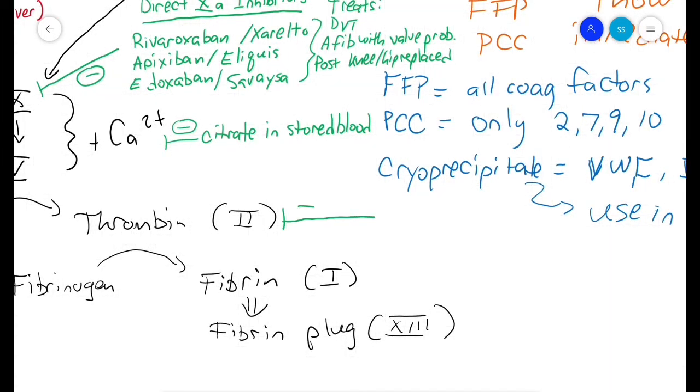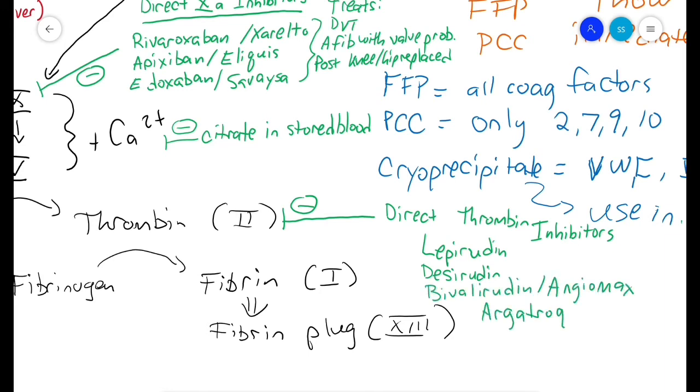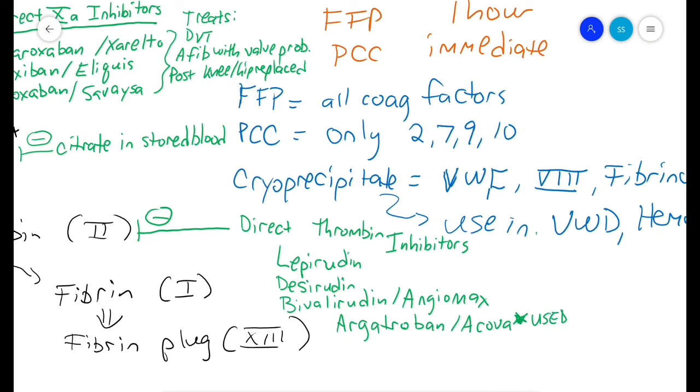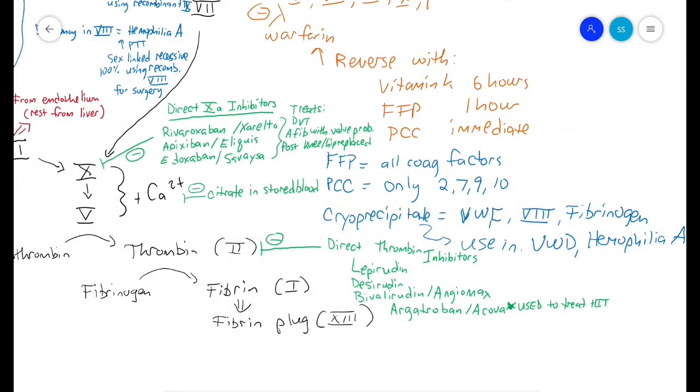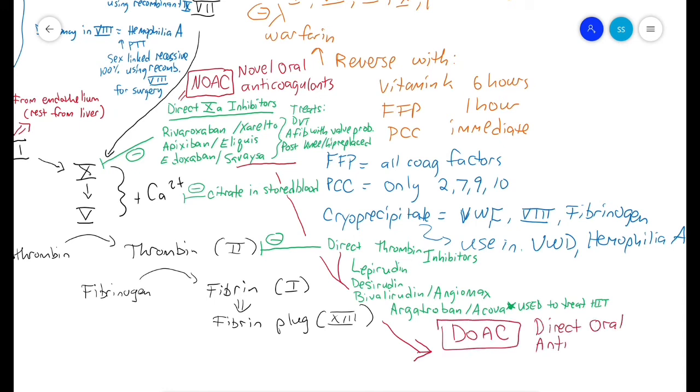Remember that calcium is important in the clotting cascade - citrate is used in stored blood and test tubes to prevent clotting. There are also direct thrombin inhibitors: lepirudin, desirudin, bivalirudin (Angiomax), and argatroban (Acova). Direct thrombin inhibitors, especially argatroban, are commonly used to treat HIT (heparin-induced thrombocytopenia). The direct 10a inhibitors are nicknamed NOACs (novel oral anticoagulants). Interestingly, the direct 10a inhibitors and direct thrombin inhibitors together are known as DOACs (direct oral anticoagulants).